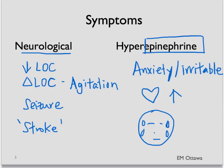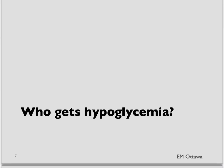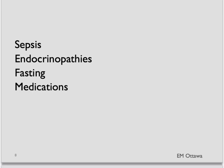In our patient, the presentation of decreased level of consciousness and the low blood sugar certainly seems to fit with hypoglycemia. Now, who's at risk of getting hypoglycemic? There are four main broad categories: sepsis or infection, some problem with the endocrine system, fasting, and medications or toxins. We'll discuss each of them.